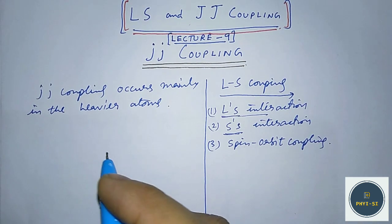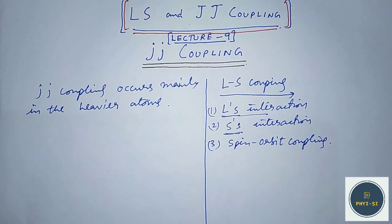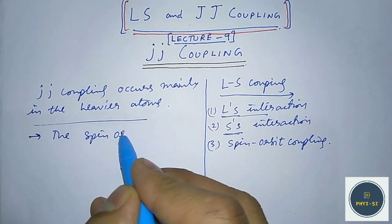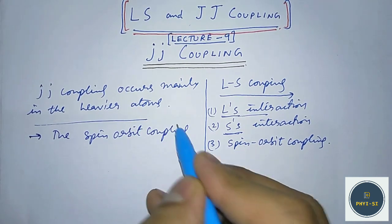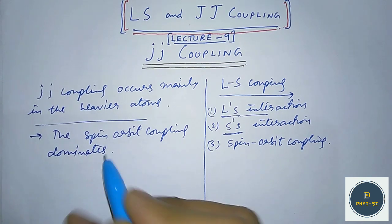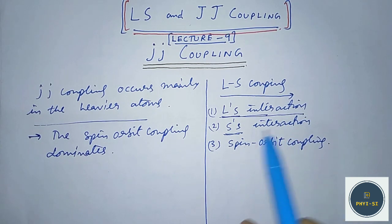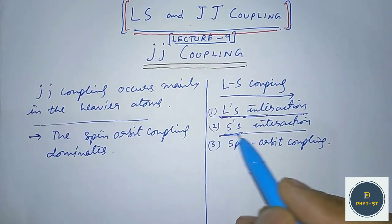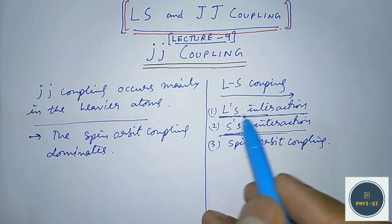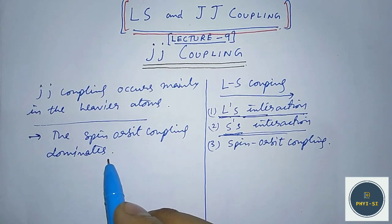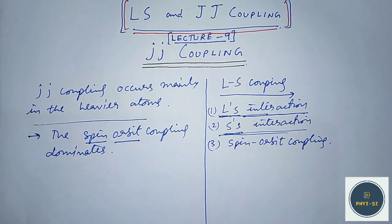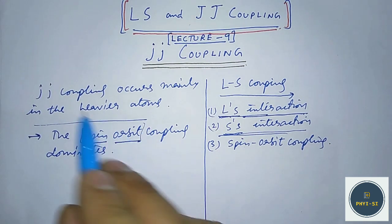JJ coupling is actually an opposite extreme to the ideal LS coupling. In this particular case, the spin-orbit coupling dominates. It means there is no interaction of various L's or various S's with each other. Instead, there is an interaction between the spin and the orbital angular momentum for individual electrons, due to which we have JJ coupling.